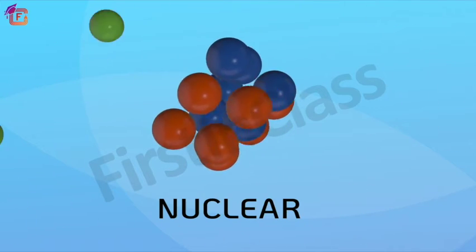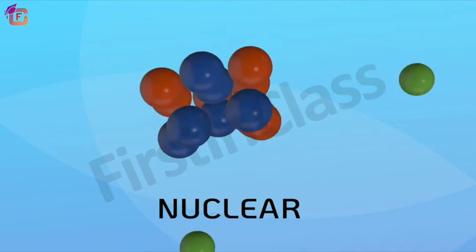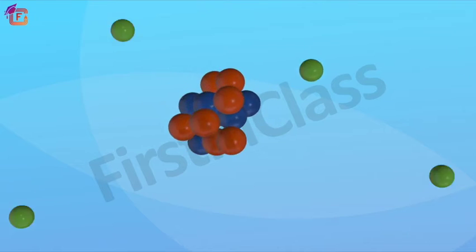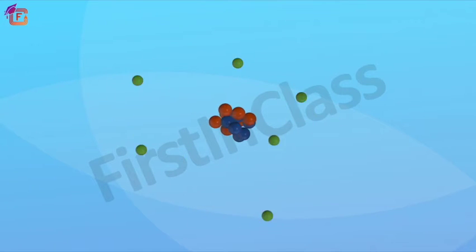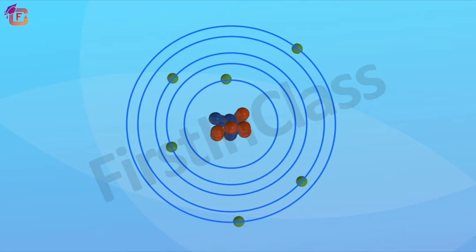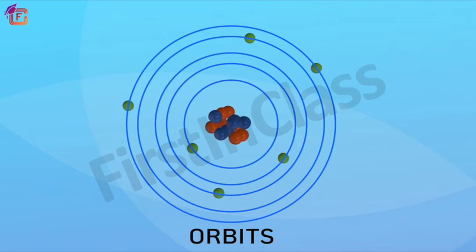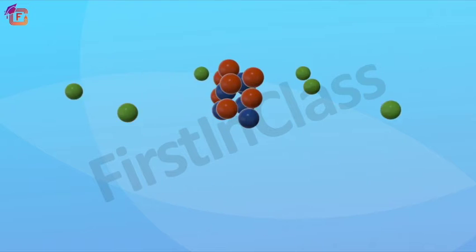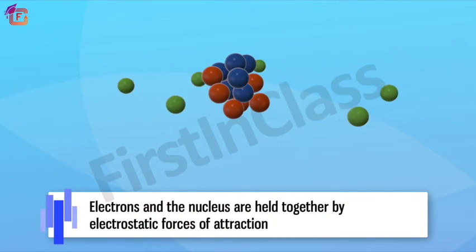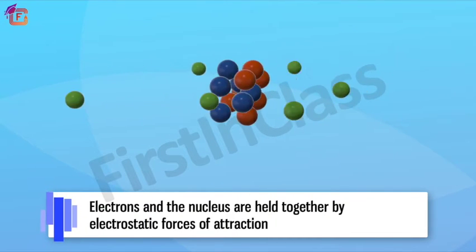This very small portion of the atom is called the nucleus by Rutherford. The nucleus is surrounded by electrons that move around the nucleus with very high speed in circular paths called orbits. Like planets revolve around the sun, electrons and the nucleus are held together by electrostatic forces of attraction.